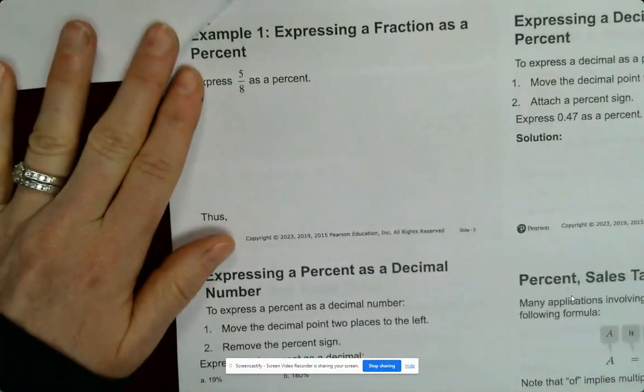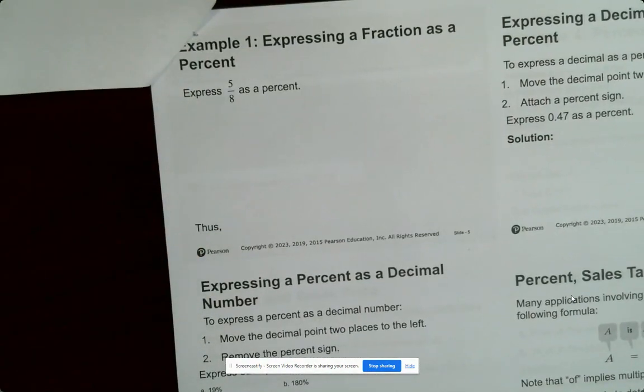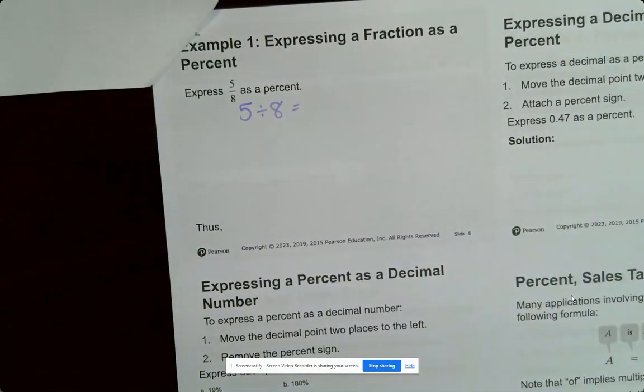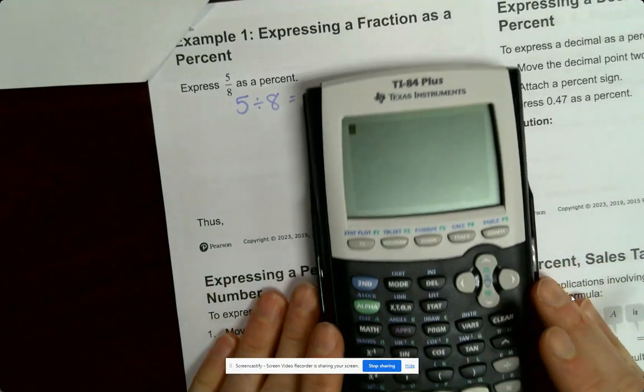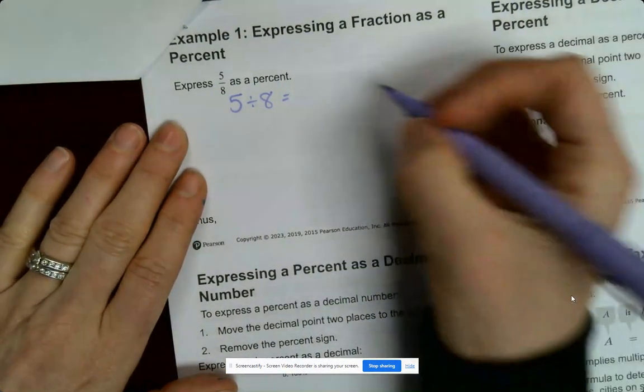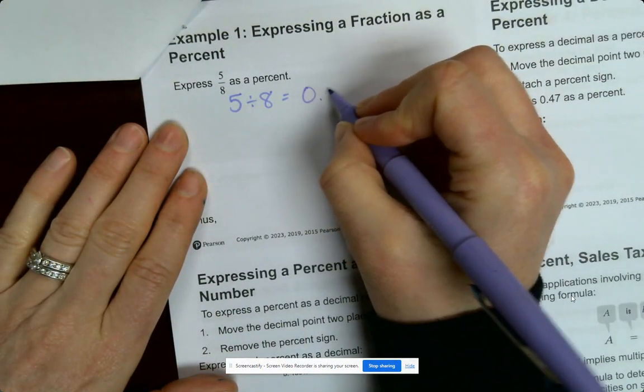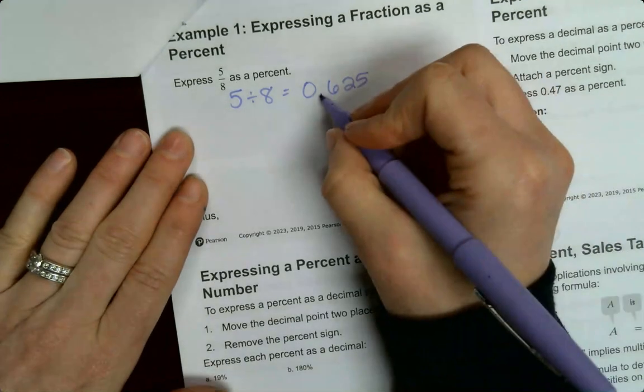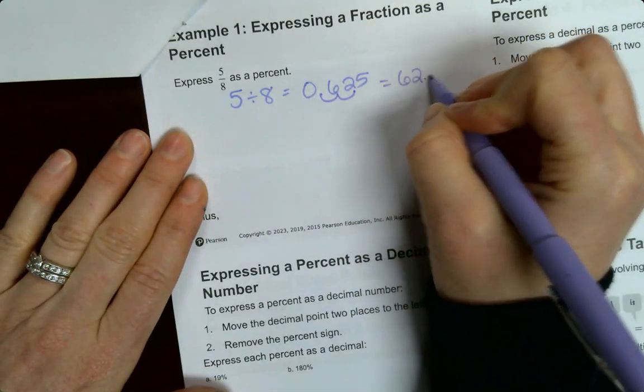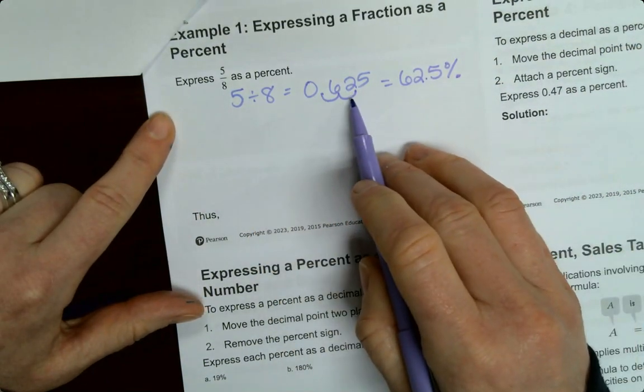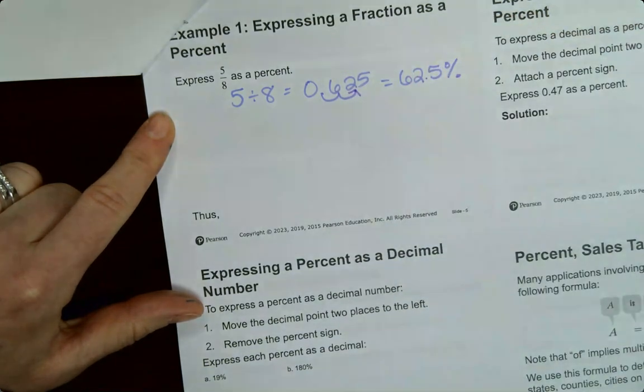Let's express five over eight as a percent. So what we'll do is we'll divide it. So five divided by eight, and you can put that in your calculator. Five divided by eight, so it's 0.625, and then you're going to move your decimal one, two, so that means it's 62.5%.